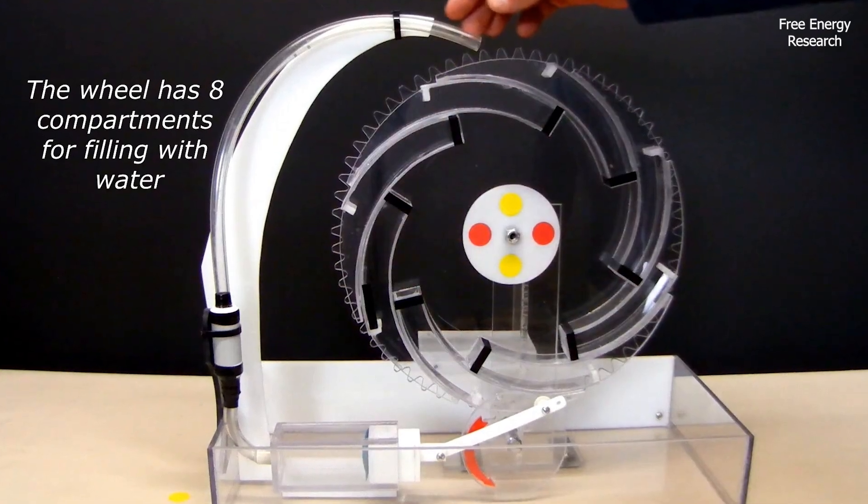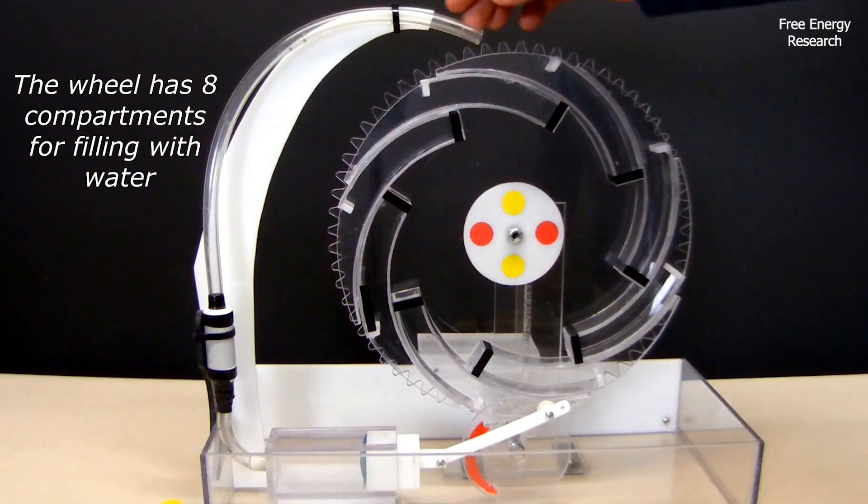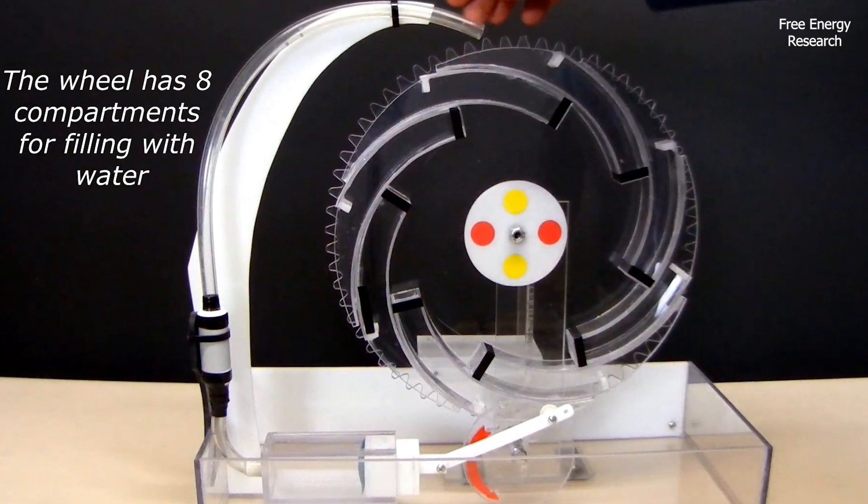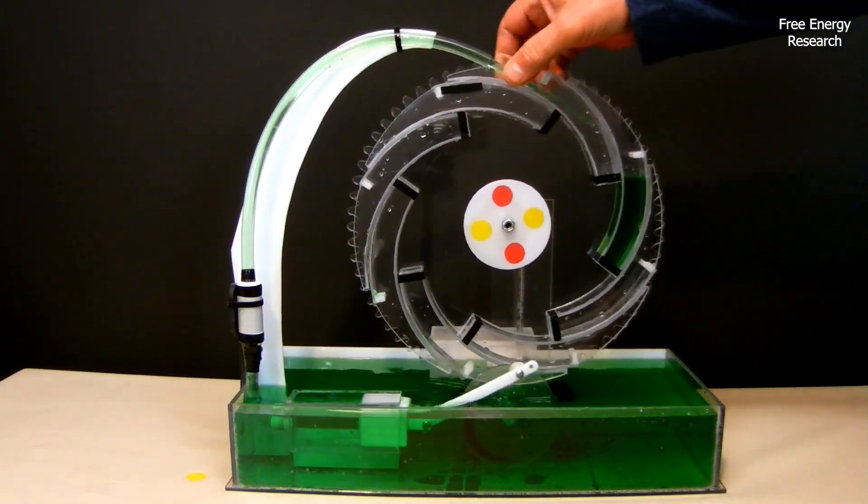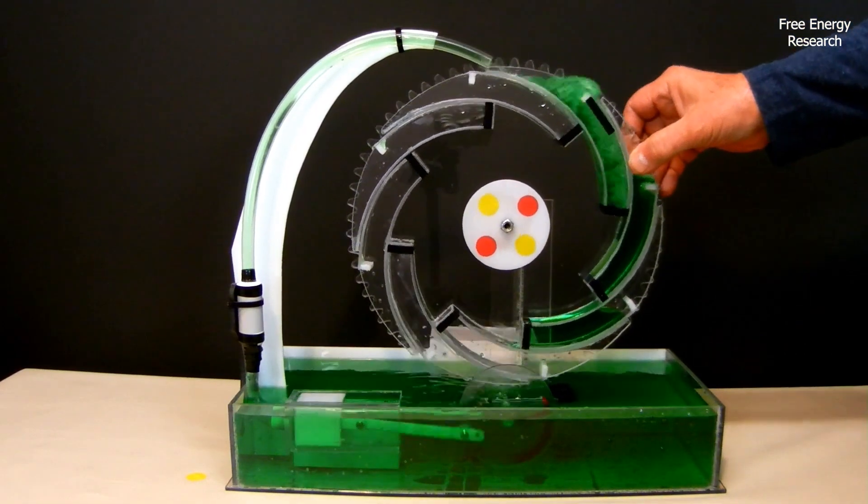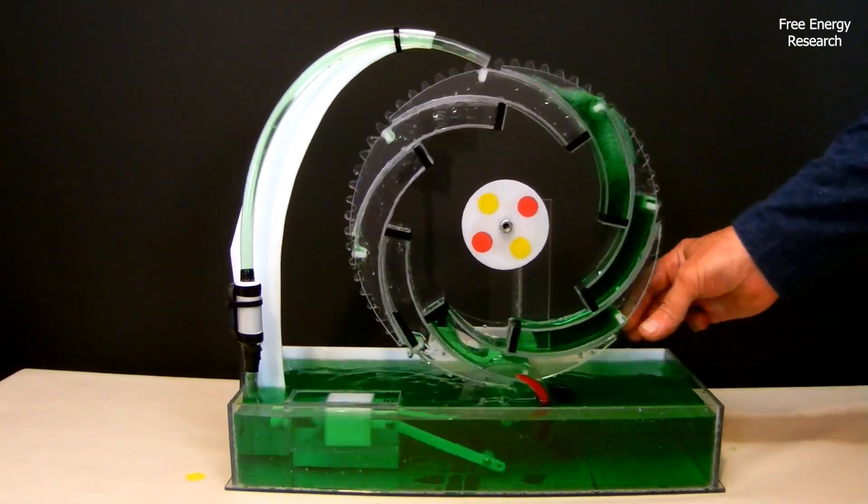At the heart of the system lies a transparent wheel with eight compartments designed to fill with water. As water is pumped into these compartments, it creates an uneven weight distribution, causing the wheel to rotate.